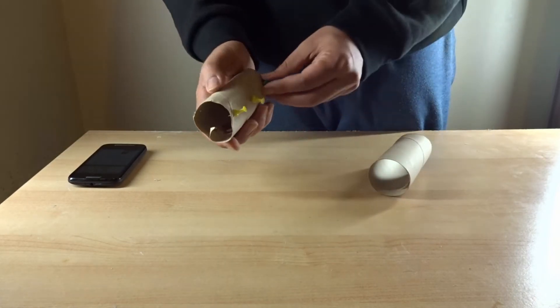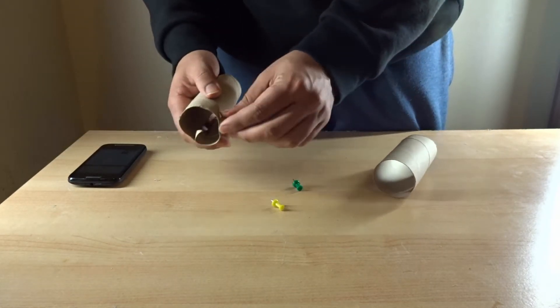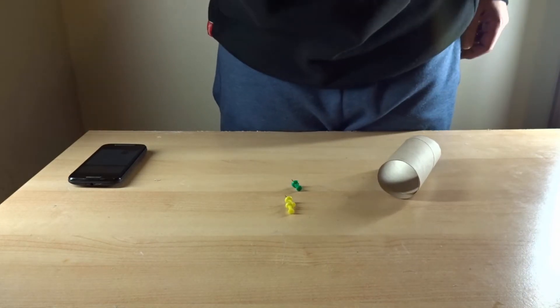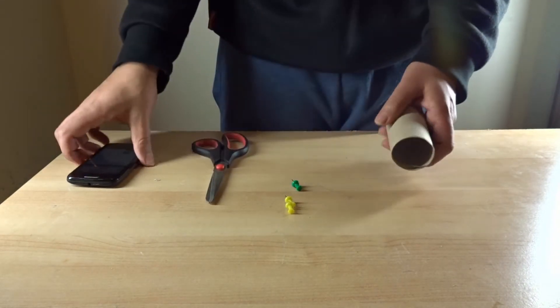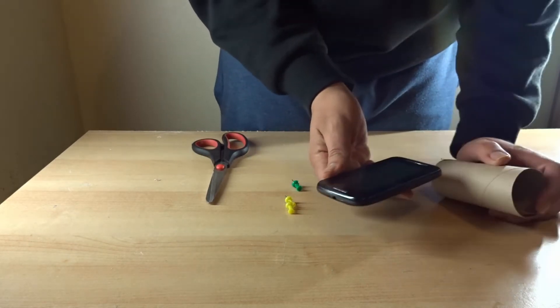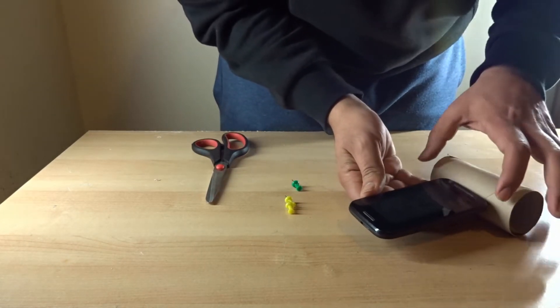So first you need a toilet roll and three pins. And then you want to first see how big your phone is. So my phone is around this size.